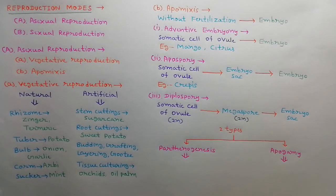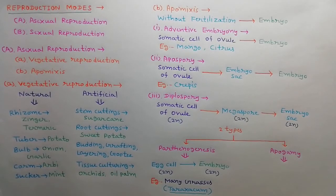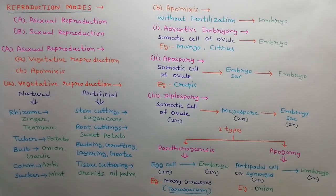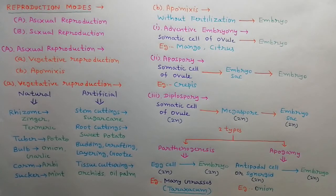Diplospory is further divided into two types: parthenogenesis and apogamy. In parthenogenesis, the embryo is developed from the egg cell — for example, in many grasses such as Taraxacum. While in apogamy, the embryo is developed from an antipodal cell or synergid — for example, in onion plant.